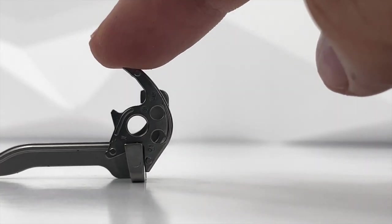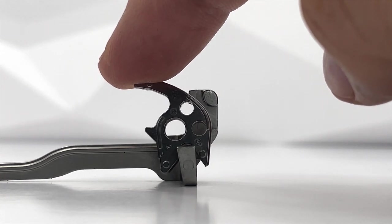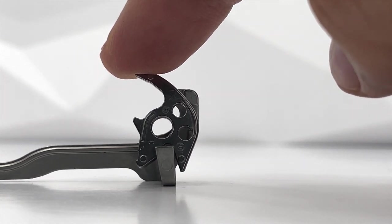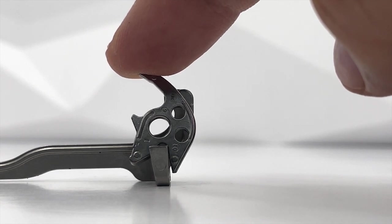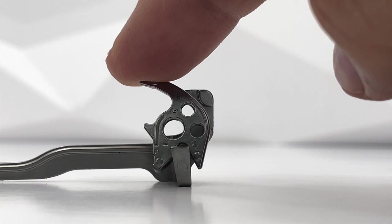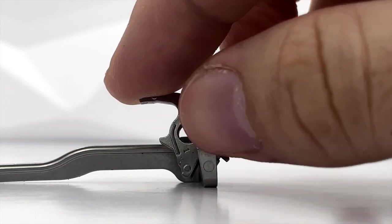So as you can see here, when the trigger is pulled, the trigger bar leg contacts the front tab and the lifter will rise up. And thanks to the trigger bar spring, when the trigger bar moves backwards towards rest, it will contact the rear tab and the lifter will fall back down.